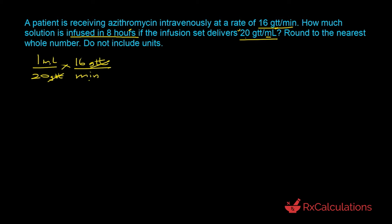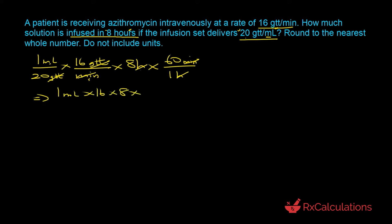To get the volume by itself in milliliters, we multiply by the duration of infusion which is 8 hours, but minutes and hours are not consistent, so we convert hours to minutes using the factor that one hour is 60 minutes. The hours cancel out, the minutes cancel out, and now you only have milliliters. We multiply all numerator terms and divide by denominator terms: 1 mL × 16 × 8 × 60 ÷ 20 = 384 milliliters. Rounded to the nearest whole number, the answer is 384.